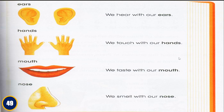Number three: mouth. We have the picture of a mouth, and the description says we taste with our mouth. Number four: nose. We have the picture of a nose and the description says we smell with our nose. Looking at these words, you may notice they relate to the five senses.